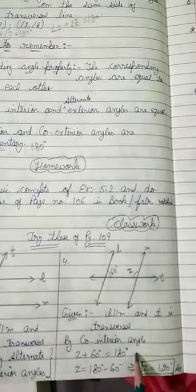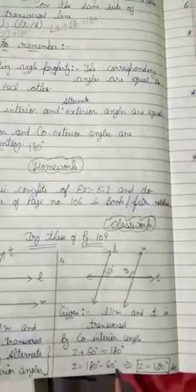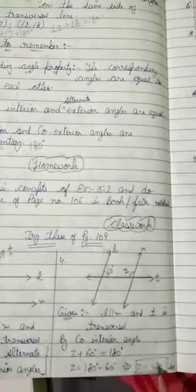Now shift the 60 degree on right hand side. Z is equal to 180 degree minus 60 degree. It will come 120 degree. So that is your answer.